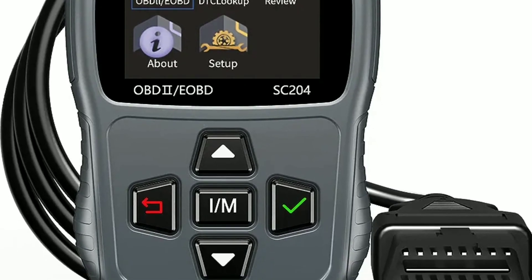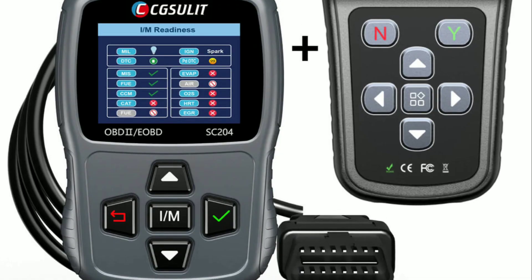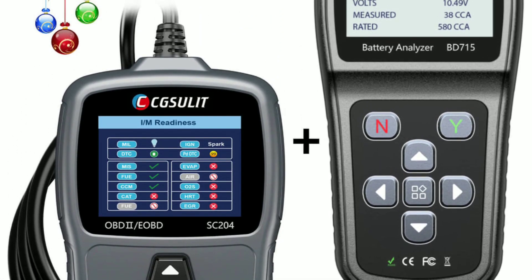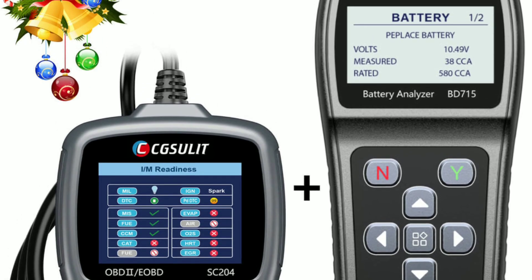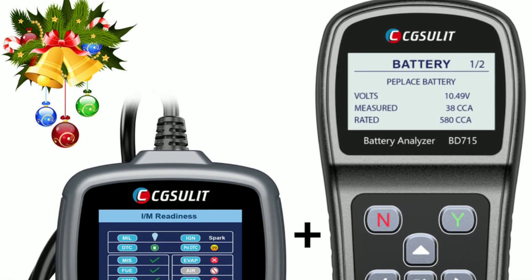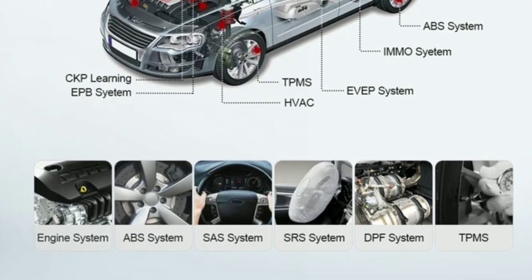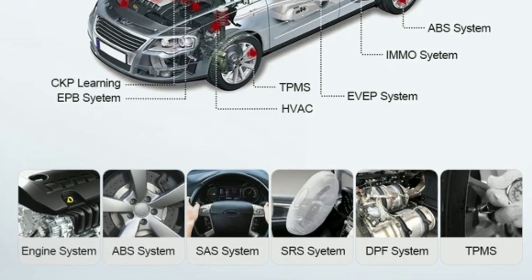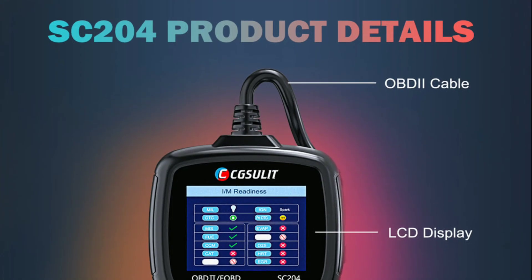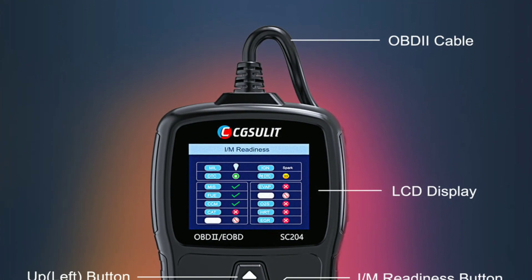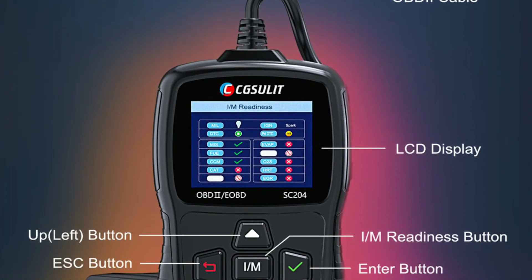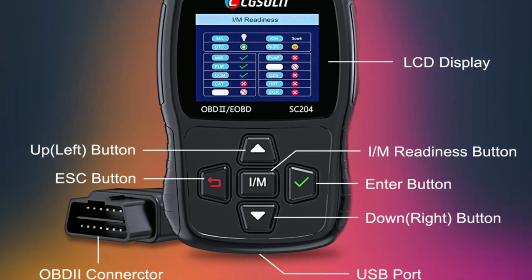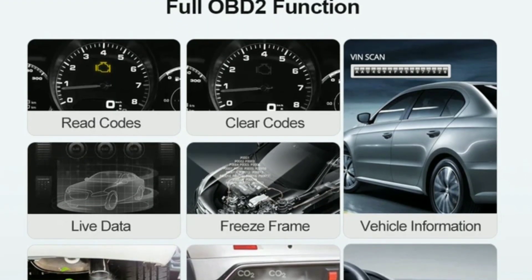Let's kick things off with an overview of the Chuselit SC204. This scan tool is designed to help you quickly and accurately diagnose issues with your car's engine, transmission, ABS, airbags, and more. It's a handheld device that connects to your vehicle's OBD2 port, making it compatible with a wide range of cars, both old and new.